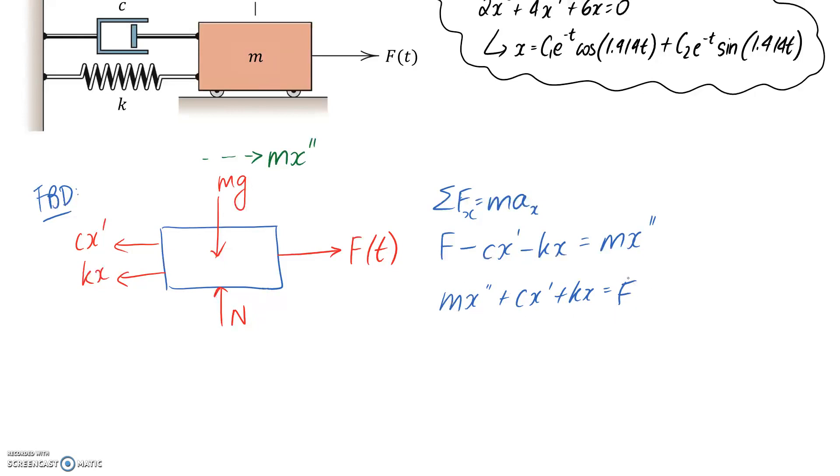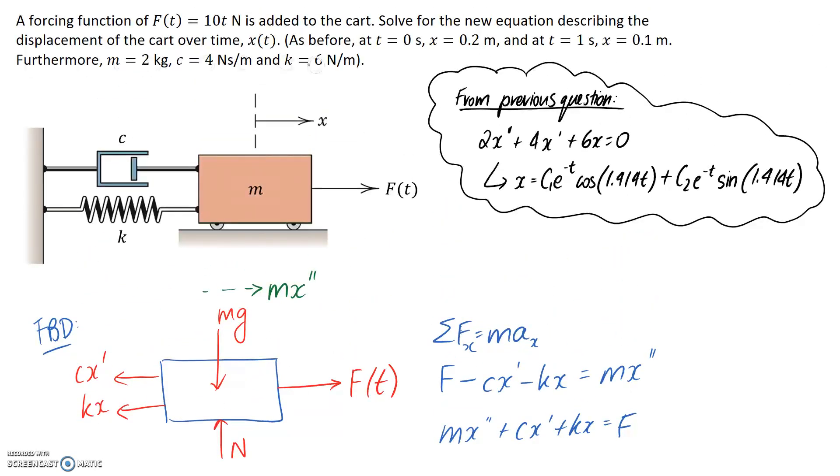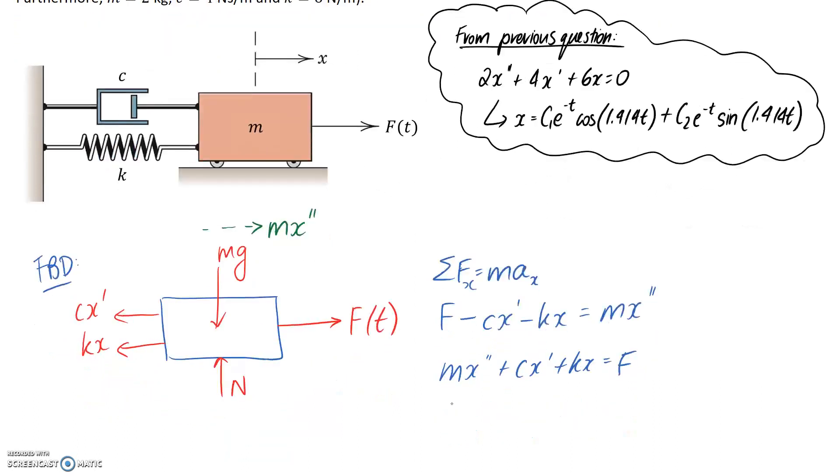If we rearrange this equation, we can get it to look like this. And I can substitute in some values because we're given all of this information as well as the forcing function over time. So if we substitute in, we get this.